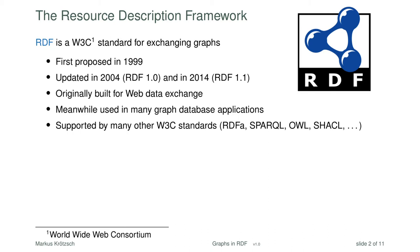RDF is, just like XML, a W3C technology standard — that's the World Wide Web Consortium, the people who brought you HTML and many other useful technologies. RDF has been conceived as a way of exchanging graphs and has quite a long history. The first version goes back as far as 1999. The first proper RDF standard was created in 2004, now known as RDF 1.0, and an update was finished in 2014, called RDF 1.1. Originally this technology was built for web data exchange — the idea was to use graphs to encode and share knowledge on the web with other humans and computers.